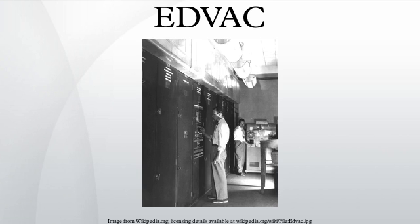Like the ENIAC, the EDVAC was built for the US Army's Ballistics Research Laboratory at the Aberdeen Proving Ground by the University of Pennsylvania's Moore School of Electrical Engineering. Eckert and Mauchley and the other ENIAC designers were joined by John von Neumann in a consulting role. Von Neumann summarized and discussed logical design developments in the 1945 first draft of a report on the EDVAC.